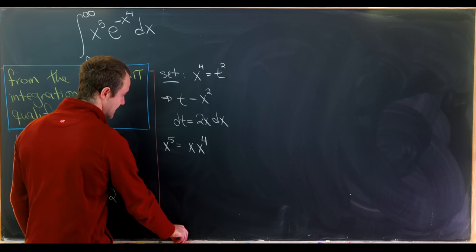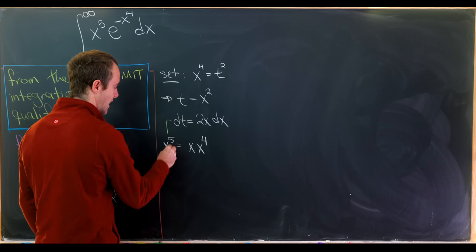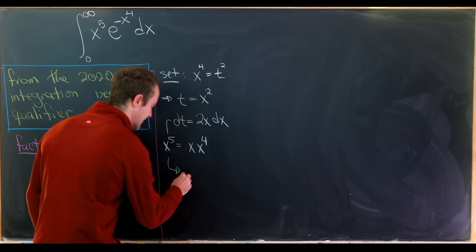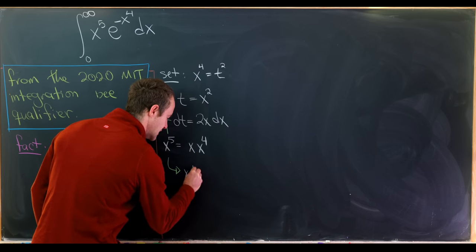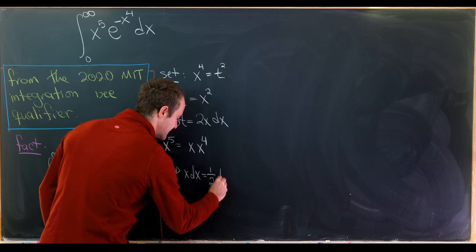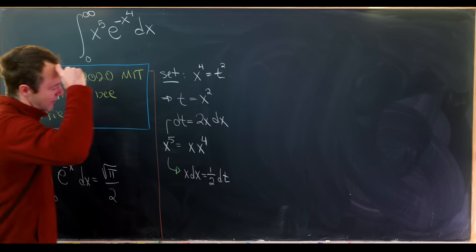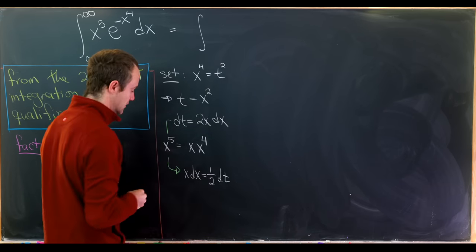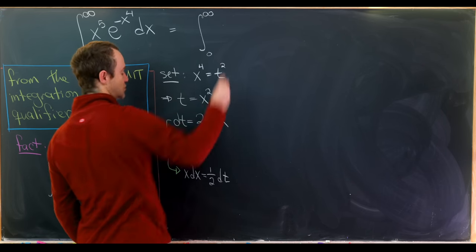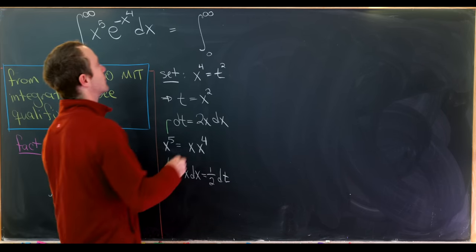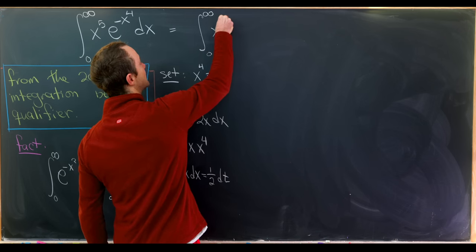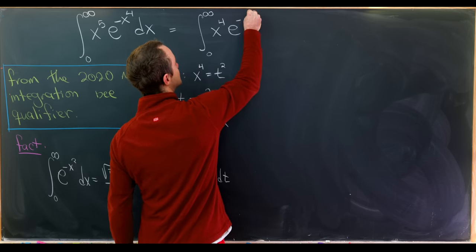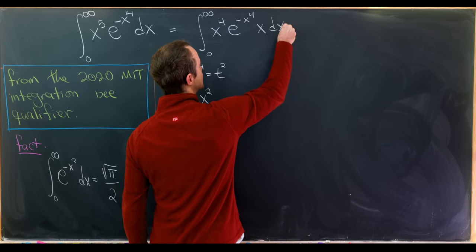But in order to make that process a little bit more obvious, let's take this dt equation and rewrite it as x dx equals 1 half dt. Okay, now let's take our original integral and rewrite it as follows. So we have the integral from 0 to infinity. And then we'll have x to the 4th, e to the minus x to the 4th, and then we'll have x dx. And now we can make all of these replacements.